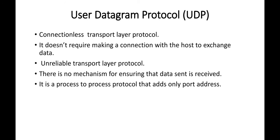A port number is the identification or name of each and every process, so that communication can be directed correctly. Every process has a port number by which it can be identified. For example, a sender's computer may use port 1049 and the receiver's application may use port 1143 — this enables my computer's WhatsApp to communicate with the receiver's WhatsApp. Process-to-process communication is achieved by knowing the port numbers on both the sender's and receiver's computer.